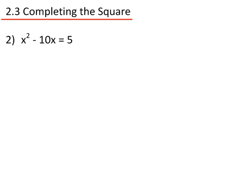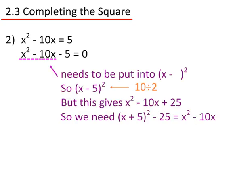Example 2: x squared minus 10x equals 5. Rearranging: x squared minus 10x minus 5 equals 0. I need to get the x squared minus 10x into the squared format. Because it's minus 10, we divide that by 2, so we have x minus 5 all squared. Expanding gives x squared minus 10x plus 25, but I don't want the plus 25, so I take it back off again.